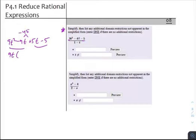I can remove a 9t from my first pair of terms, leaving a t minus 1. I can remove a 5 from my second pair of terms, also leaving a t minus 1.